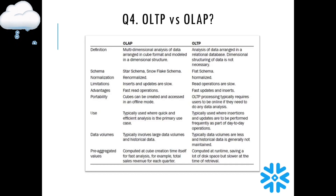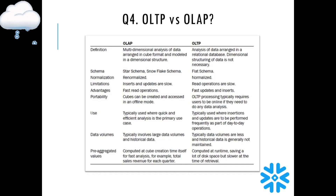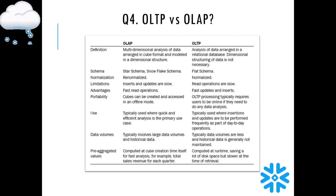Schema-wise, in OLAP you can use Snowflake schema or star schema, but in OLTP you use a flat schema. OLAP is denormalized while OLTP is normalized. Regarding performance limitations: OLAP insert and updates are slow, while in OLTP read operations are slow but inserts and updates are faster.